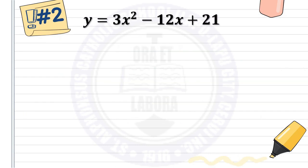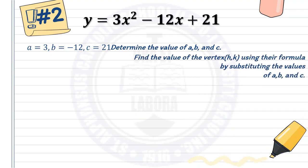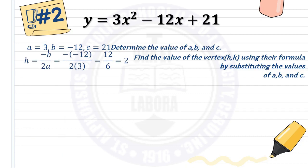Example number 2: y equals 3x squared minus 12x plus 21. First, determine a is 3, b is negative 12, and c is 21. Finding h: h equals negative b over 2a. Substituting gives negative of negative 12 over 2 times 3, which is positive 12 over 6. So h is 2.